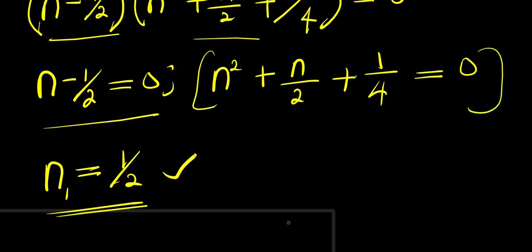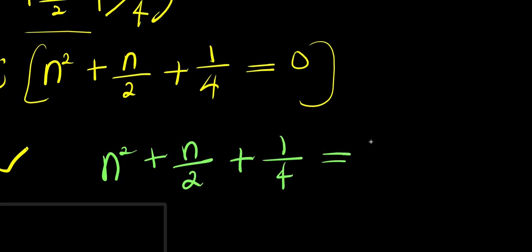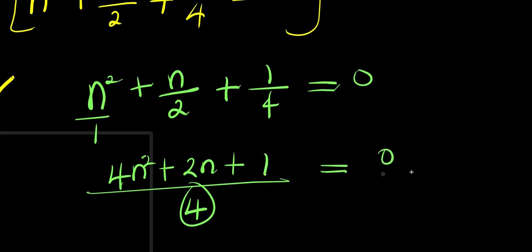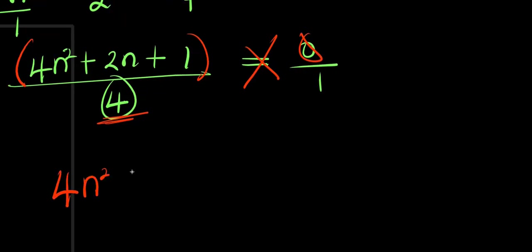Now we have the quadratic equation n² plus n over 2 plus 1 over 4 equals 0. We need to find the common LCM, which is 4. Multiplying through: 4n² plus 2n plus 1 equals 0. This gives us the simplified quadratic equation.